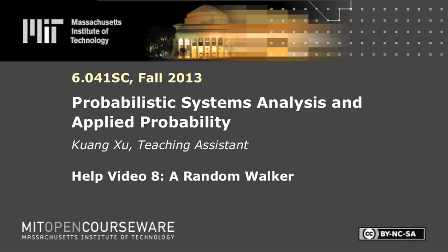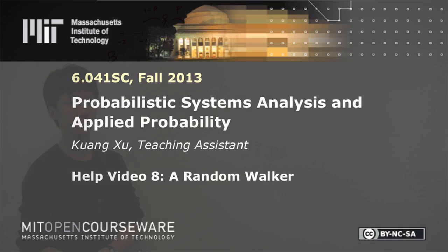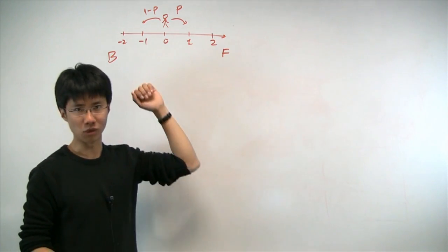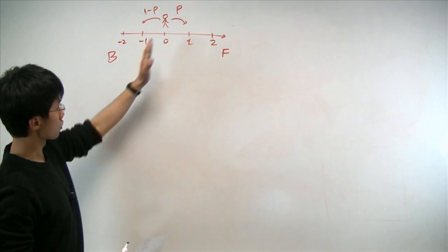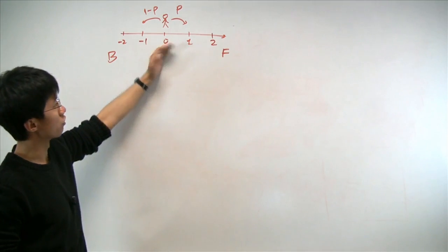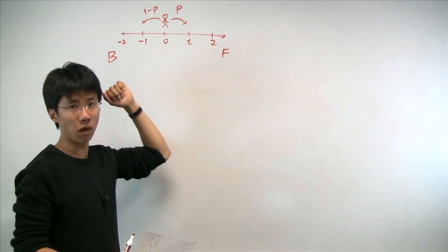In this problem, we'll be working with an object called random walk, where we have a person on the line, or a tightrope, according to the problem. Let's start from the origin. And in each time step, it would randomly either go forward or backward with a certain probability.